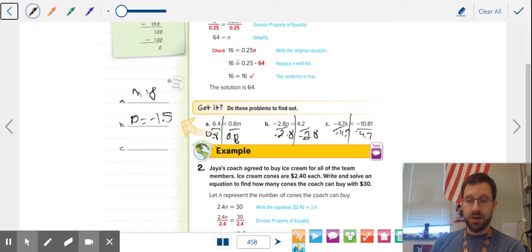I just do 10.81. Whoops. Divided by 4.7. I didn't even write the negative. No, I did write it there. And I get 2.3. So really, these are not hard, especially if I have a calculator with me.